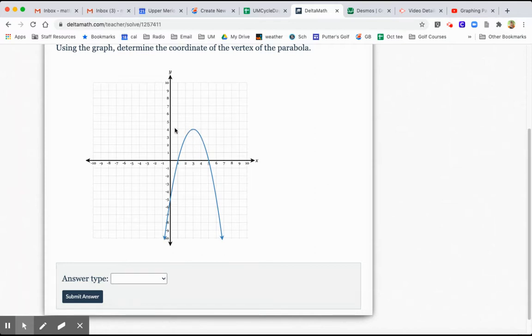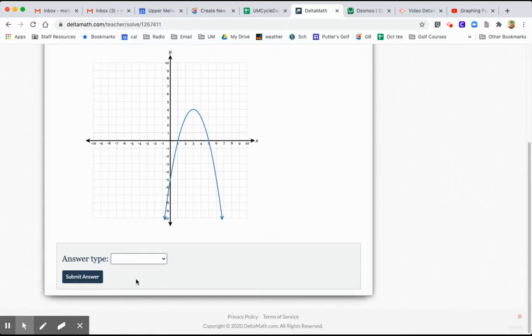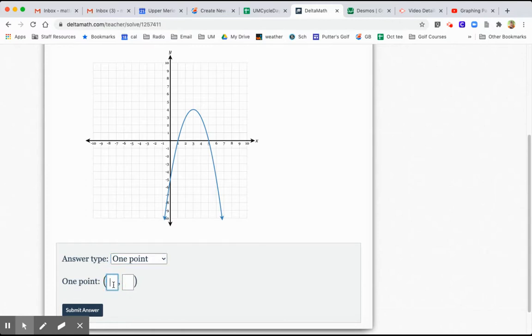It's just the ordered pair 3, 4, right? So the answer type here is just one point. And I'll literally just type in the coordinates of the vertex. 3 to the right, 4 up. So that's 3, 4.